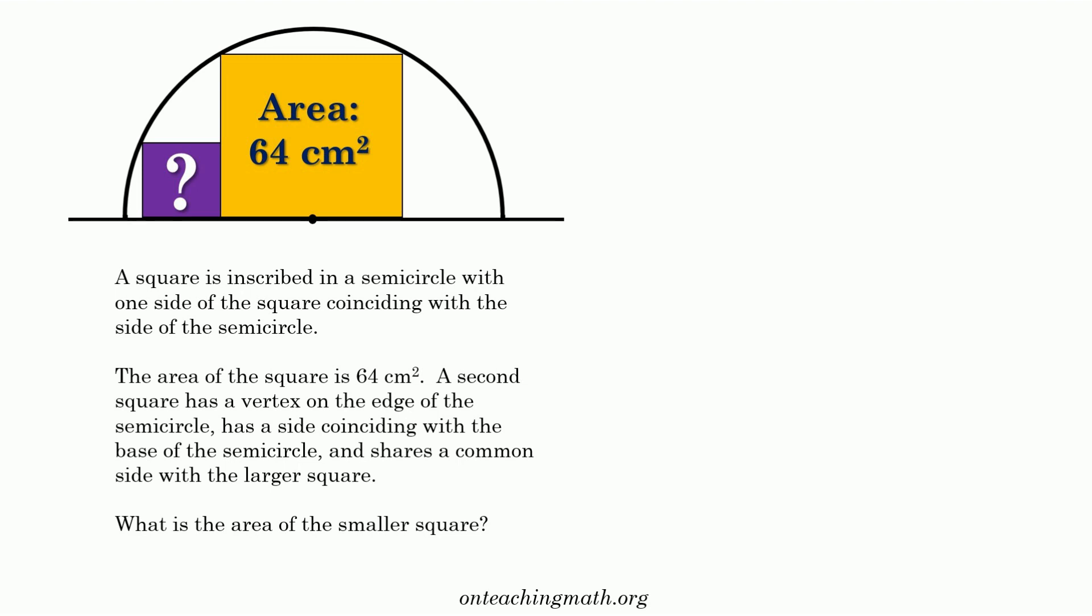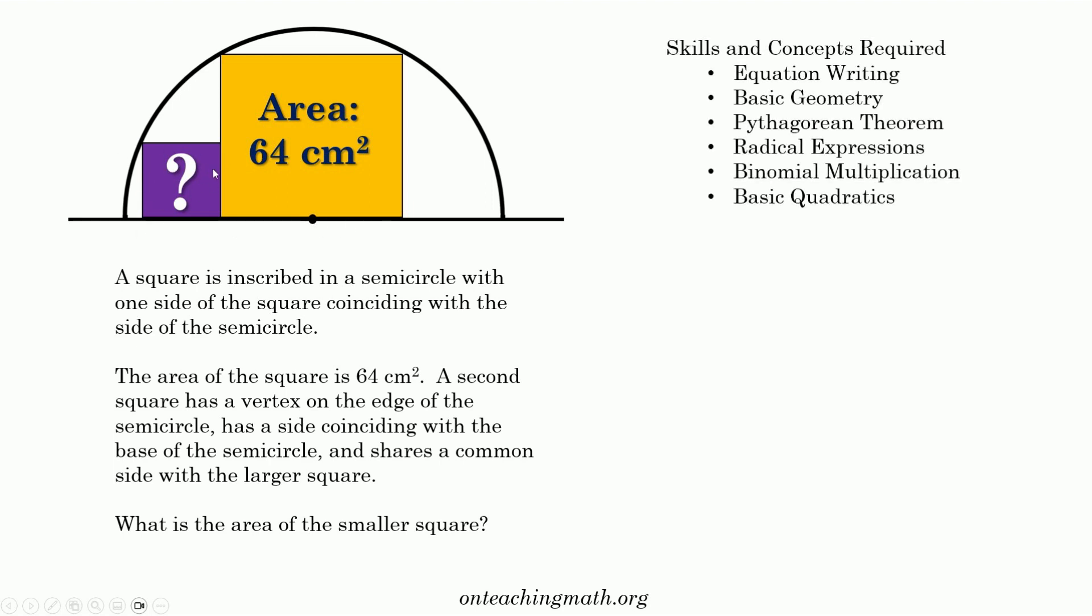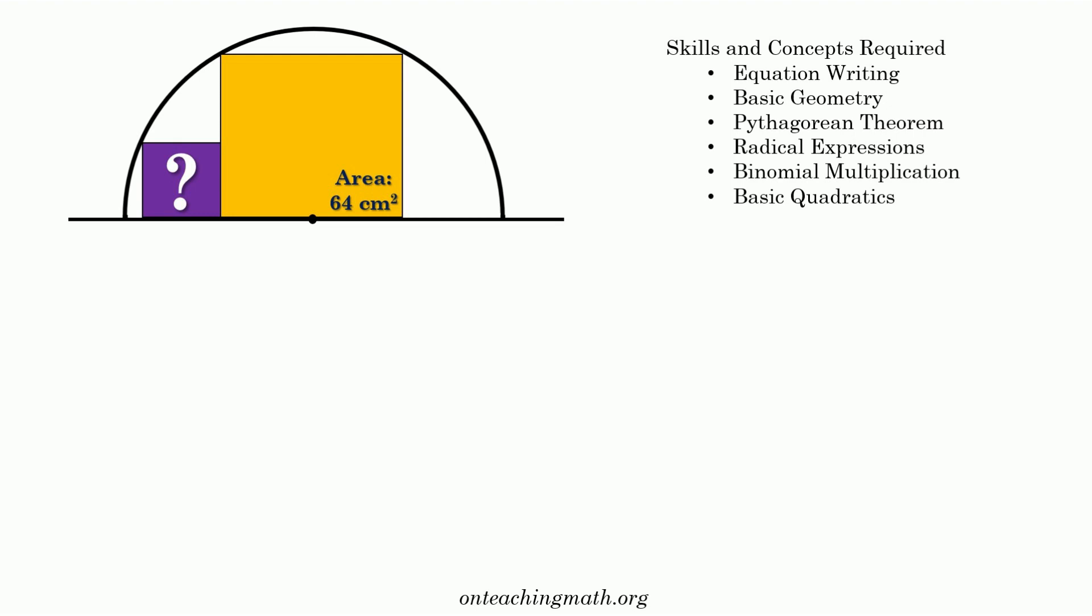So here's what we got. Just to make sure we're all clear, we have a semicircle. A square with an area of 64 is inscribed. The center of the semicircle is right here that also bisects the bottom of the square. We're trying to figure out what is the area of this square over here. So we know the area of the square is 64. Since we know the area of the square is 64, we can figure out that the side is 8, because if the area is 64, that means the length squared is 64, so the length is 8.